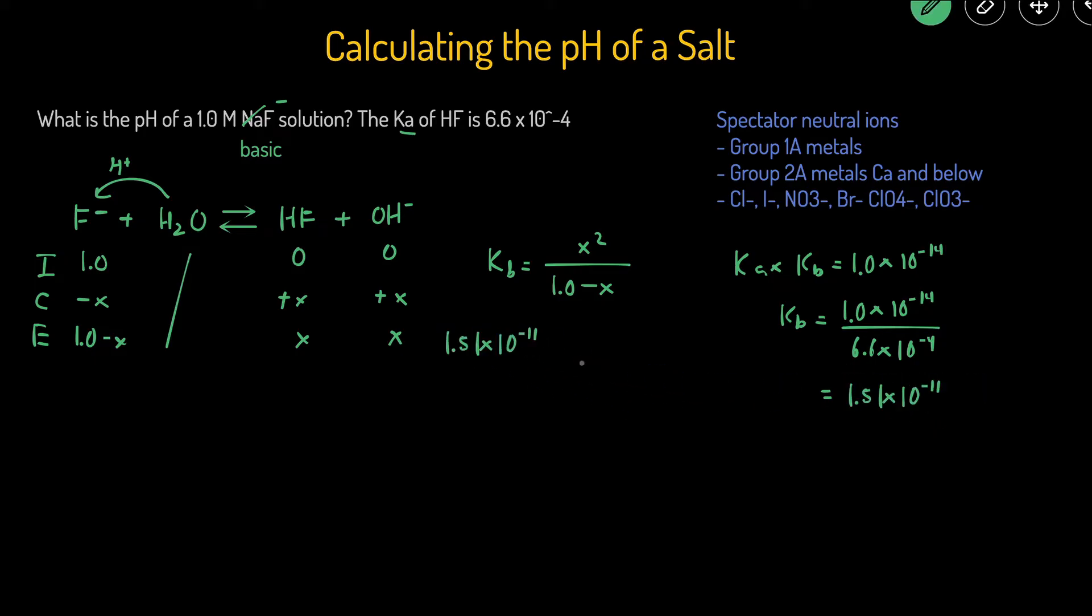Let's plug it in right here. That's going to equal X squared divided by 1.0 minus X. But since KB is so small, it means this reaction doesn't really happen much. So that means the X is going to be extremely small, and we can ignore the minus X. If the K value is to the negative 4 power or less, then you can just ignore the minus X.